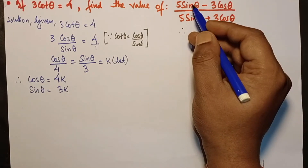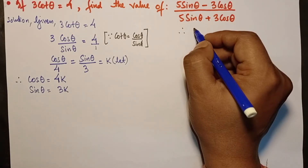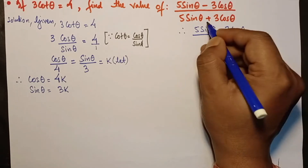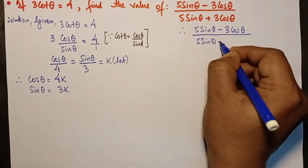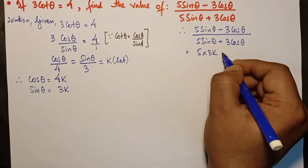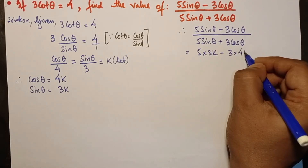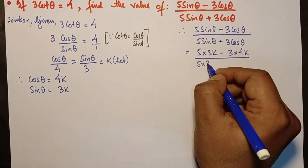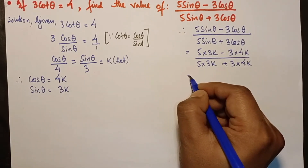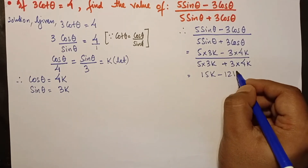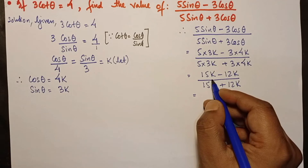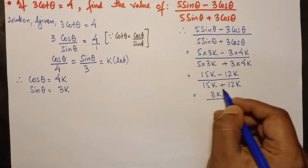Substituting into (5sinθ - 3cosθ) / (5sinθ + 3cosθ): the numerator becomes 5(3k) - 3(4k) = 15k - 12k, and the denominator becomes 5(3k) + 3(4k) = 15k + 12k.